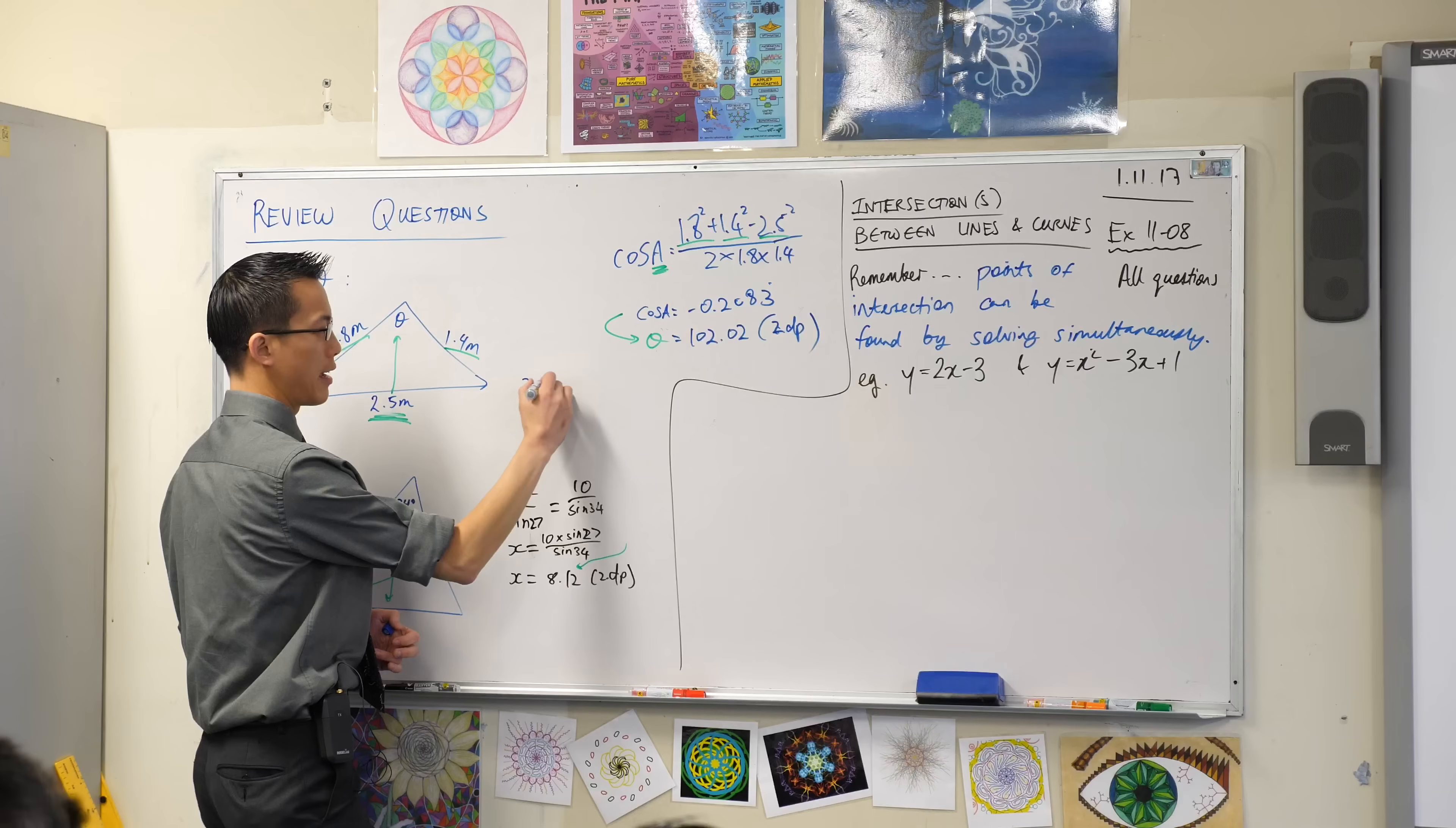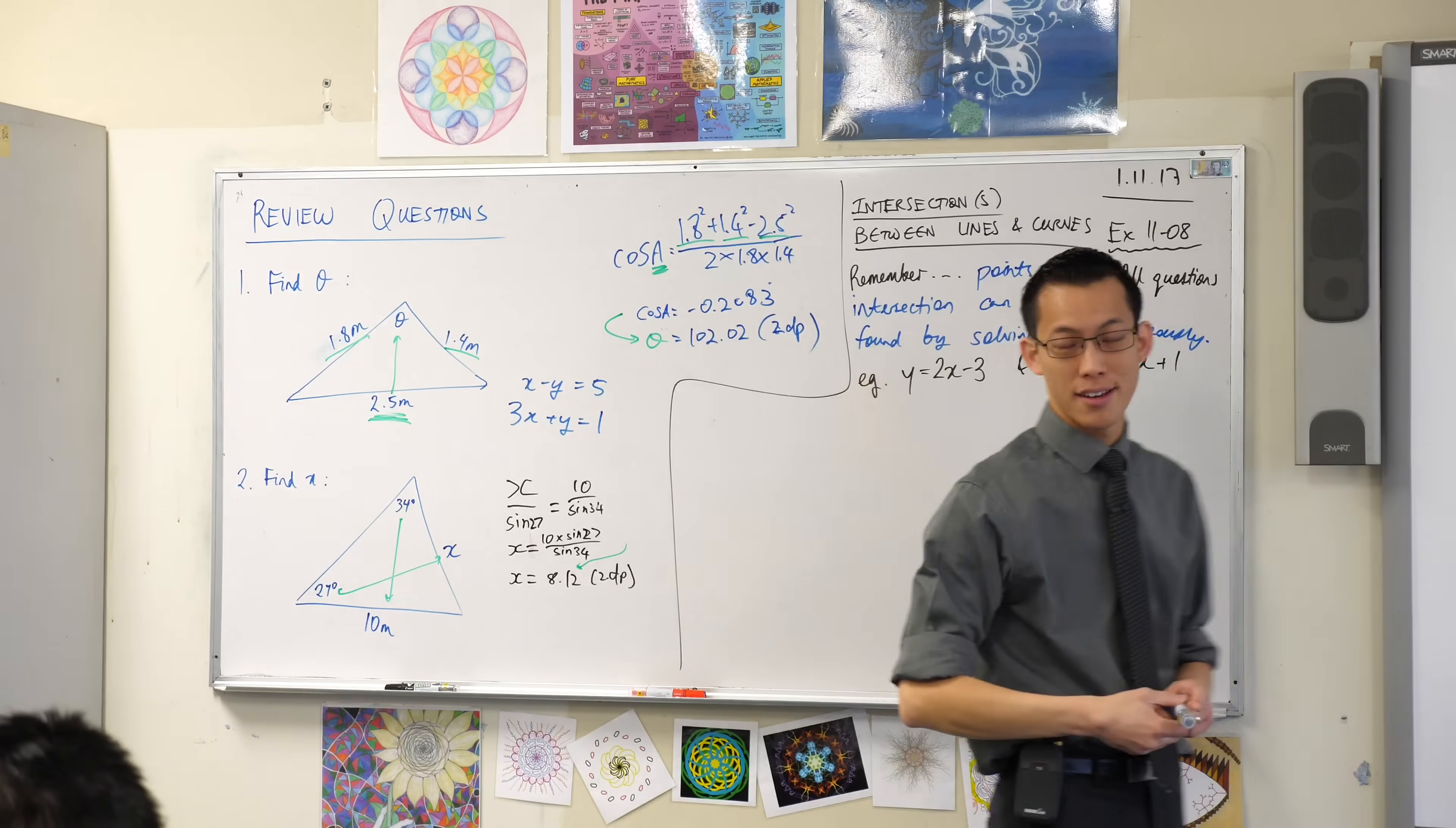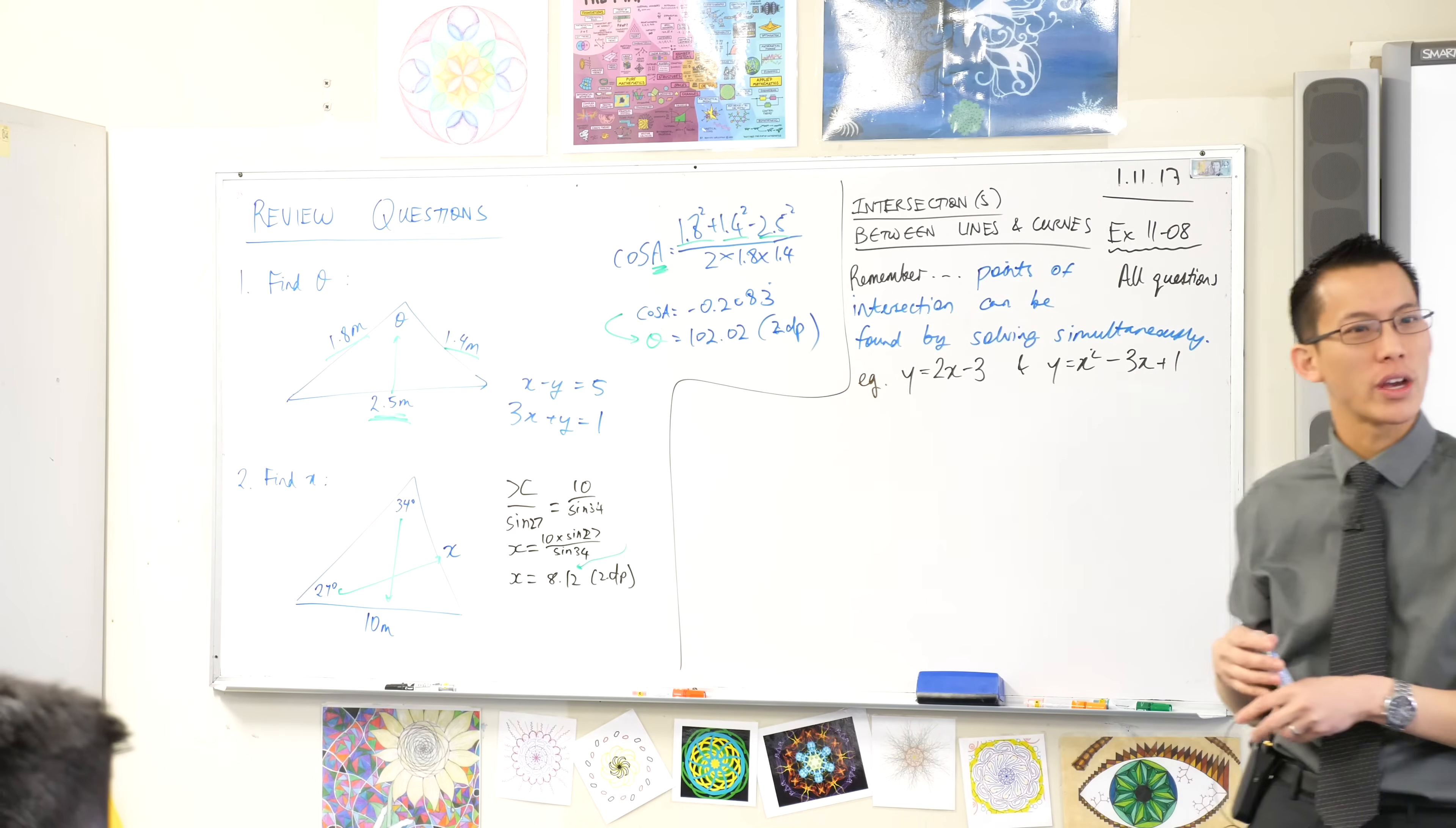If I gave you a line like this and then another line like this, we know three ways to solve simultaneous equations. Which do you think might be the quickest way? They all work but which might be the quickest?